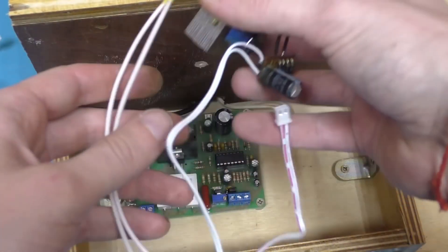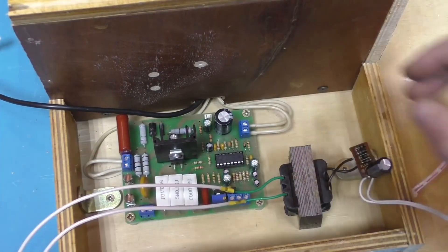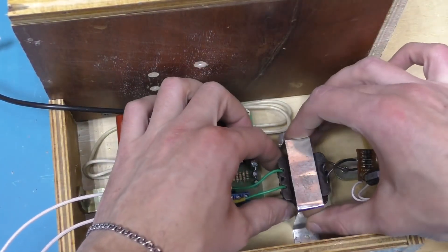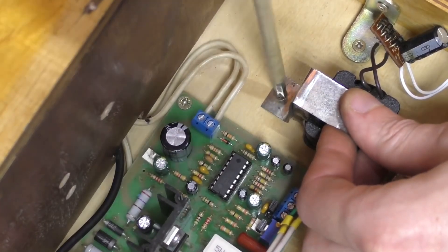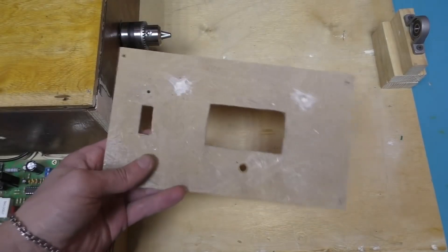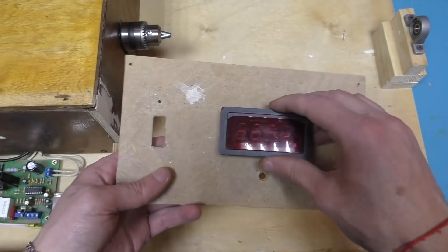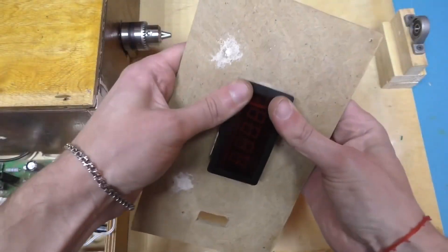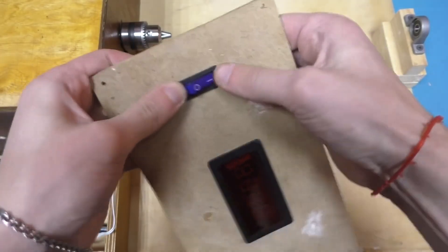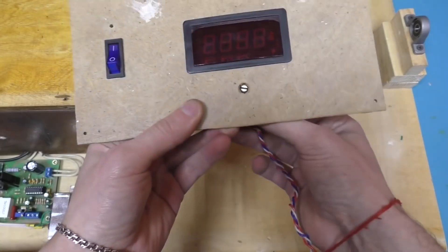We will also need a 12-volt transformer, which will be used to power the tachometer sensor. I made a cover out of fiberboard, in which we need to install the sensor panel, a power button, and a variable resistor that we will use to adjust the speed.